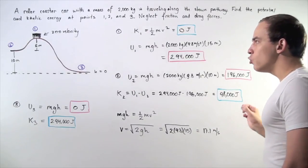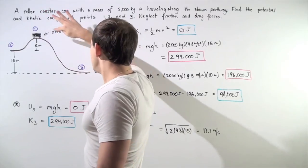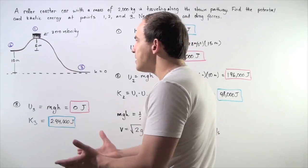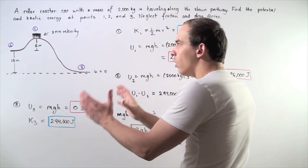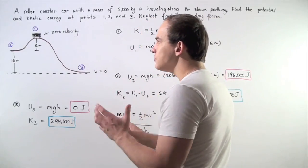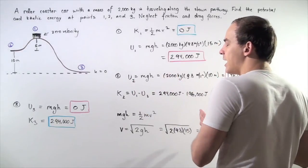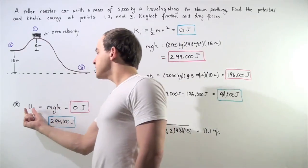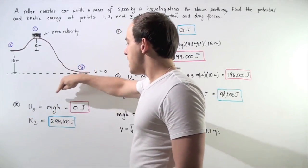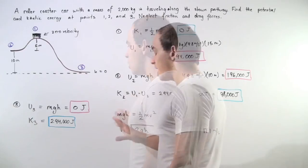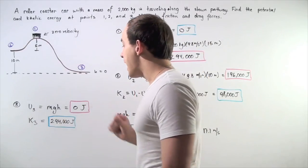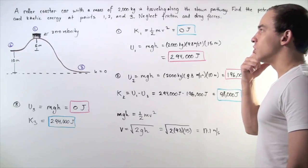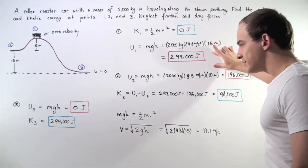When the object moves from point 1 to point 3, there is a complete transformation of energy. All the gravitational potential energy converts to kinetic energy because the height at point 3 is zero. So gravitational potential energy mgh equals 0 joules, and all 294,000 joules goes into the kinetic energy of the rollercoaster car.